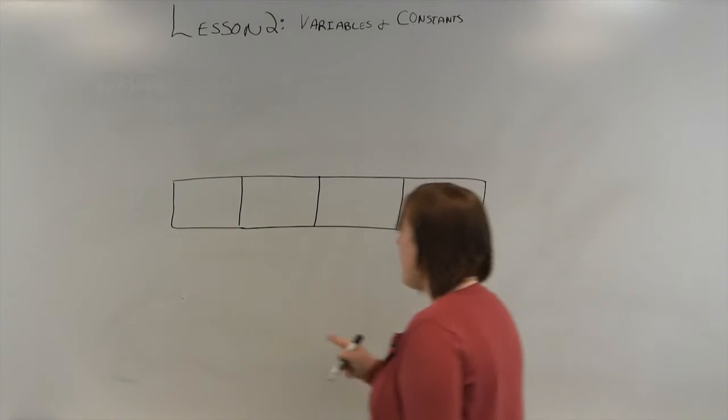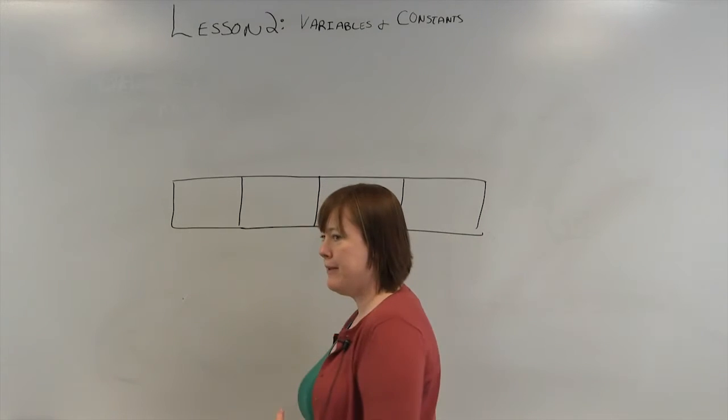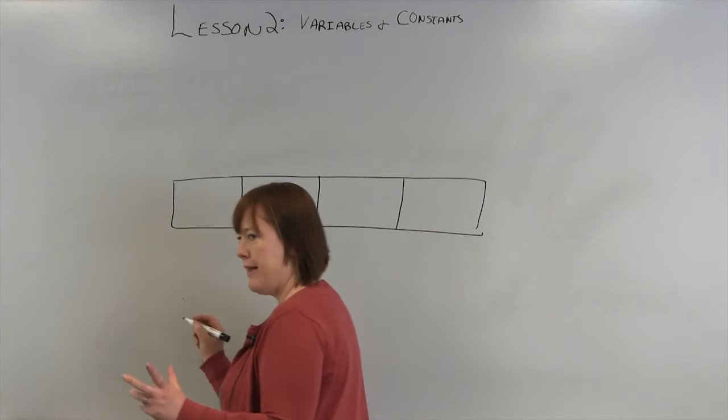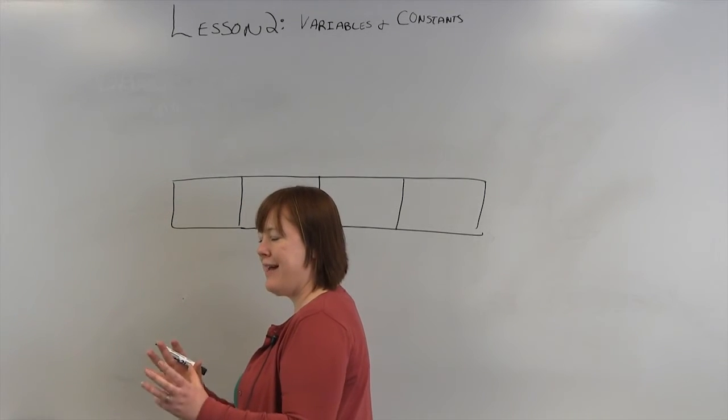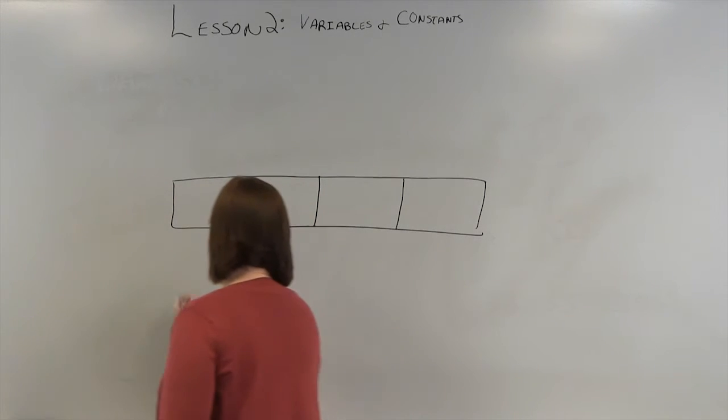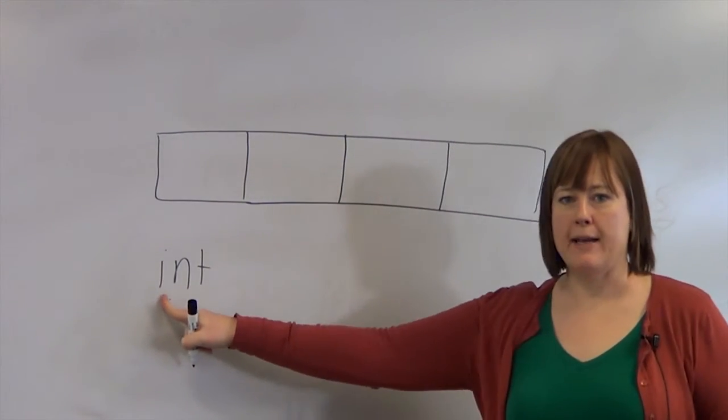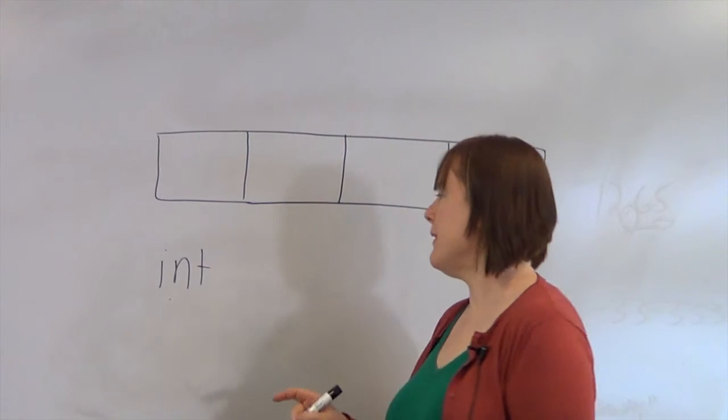So we'll say that these are blocks of memory. And if I want to store an integer, typically in most programs, I'm going to declare my integer, which is to assign a memory spot and give it a name. And you'll usually do that by declaring the type int and giving it a name.